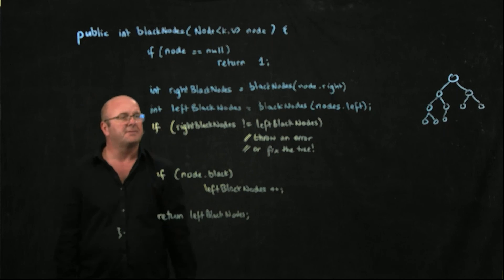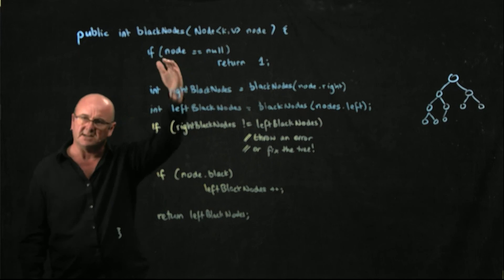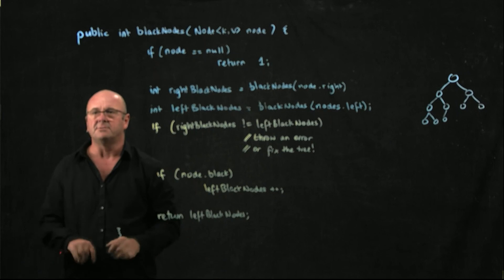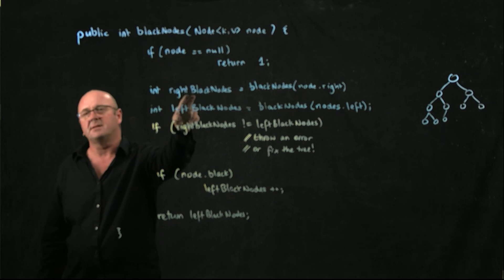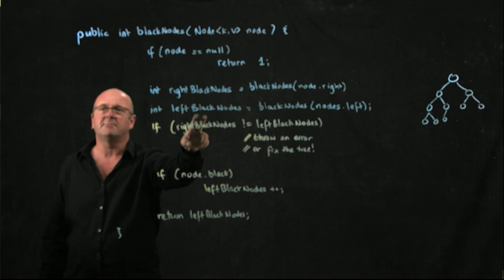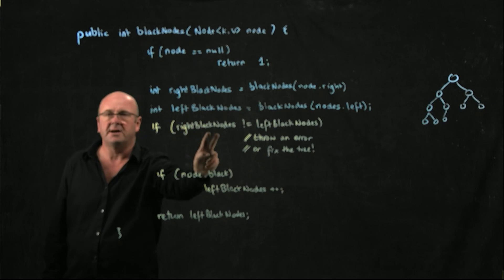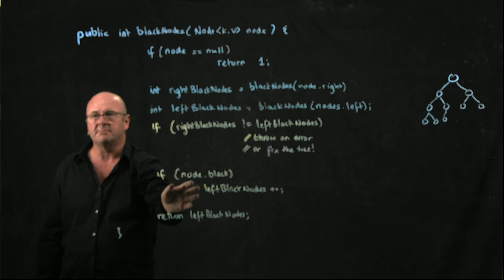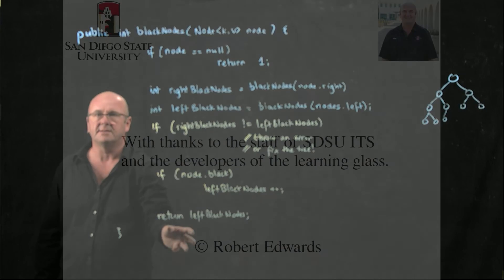And then we have a nice recursive method that takes our root node, starts with our root node, we'll go through the whole tree, first counting the number of black nodes on the right, then counting the number of black nodes on the left, comparing them to make sure they're the same, incrementing them if possible, and returning the number.